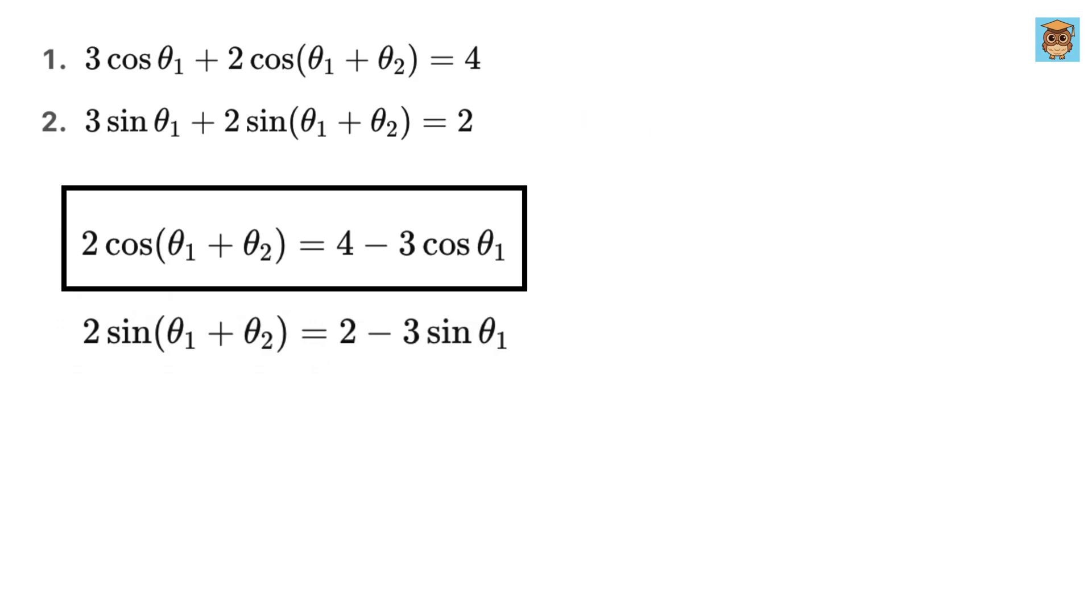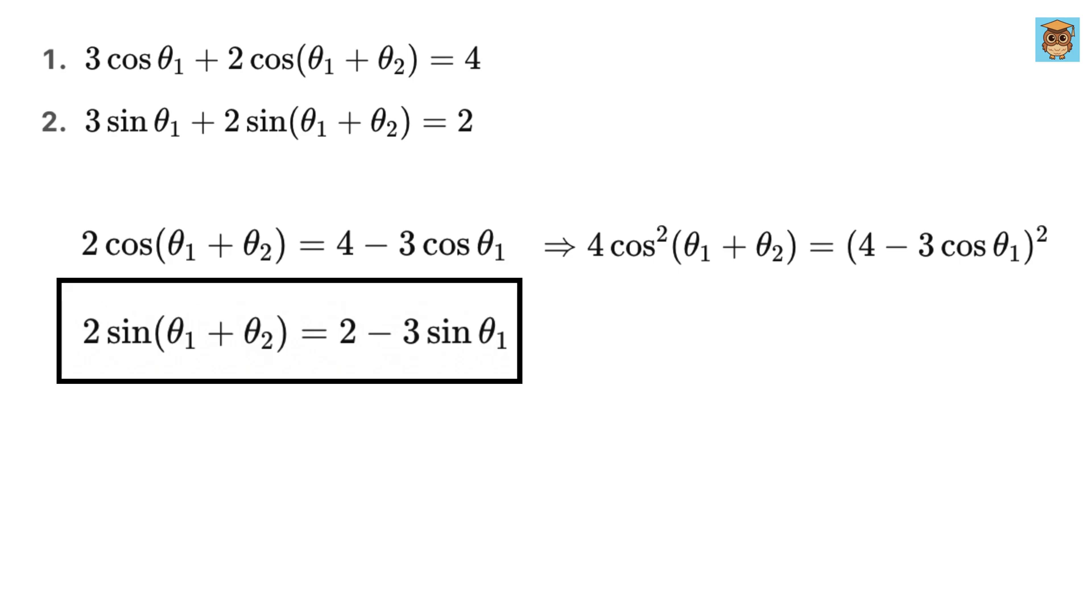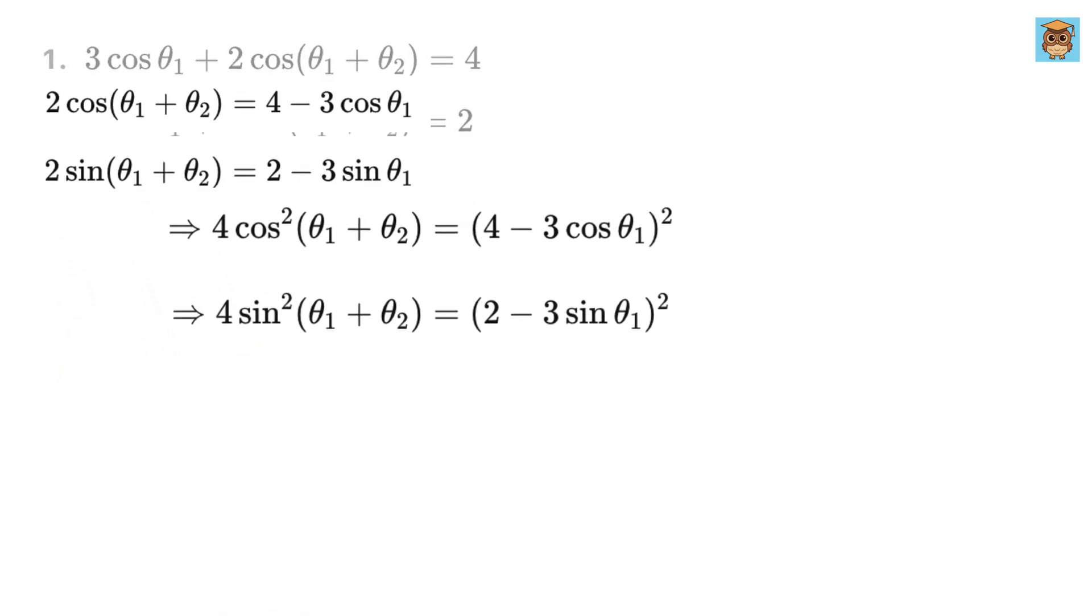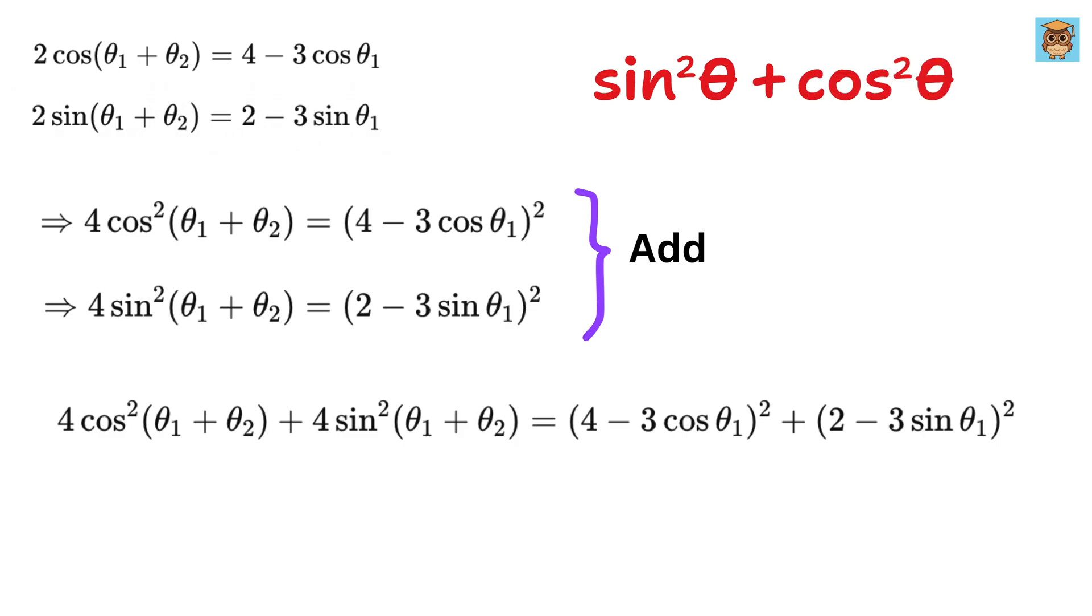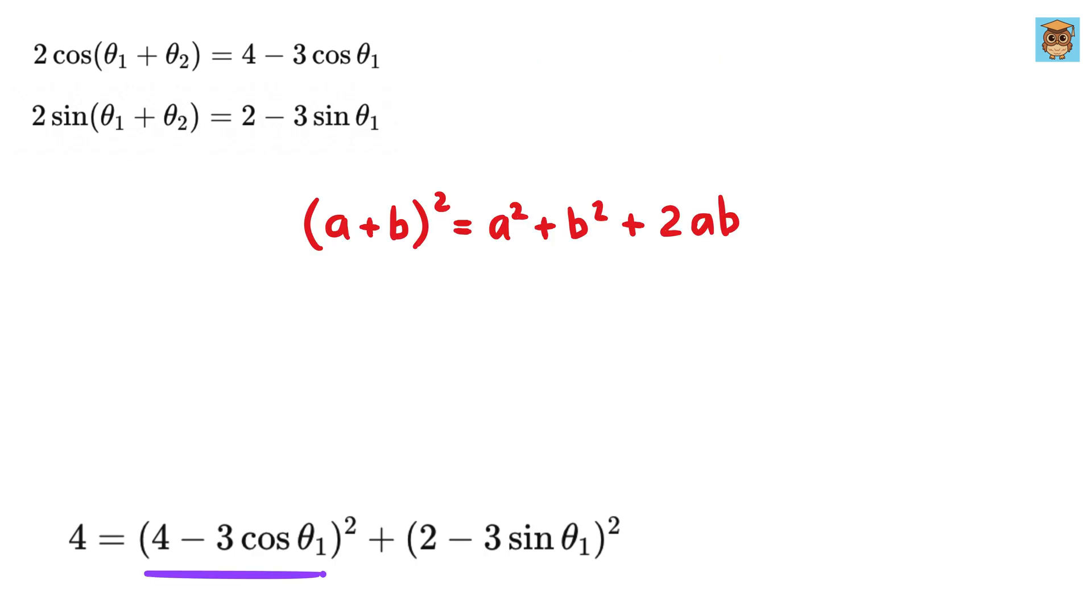Square both sides of this equation to get this and this equation will become 4 sine theta 1 plus theta 2 whole square equals this square. Can you think of what I will do? Yes! Right! I will add both these equations to get this plus this equals this plus this. Using the identity sine square theta plus cosine square theta equals 1, we get this as 4. Now expand this using a plus b whole square formula to get this and expand this to get this.